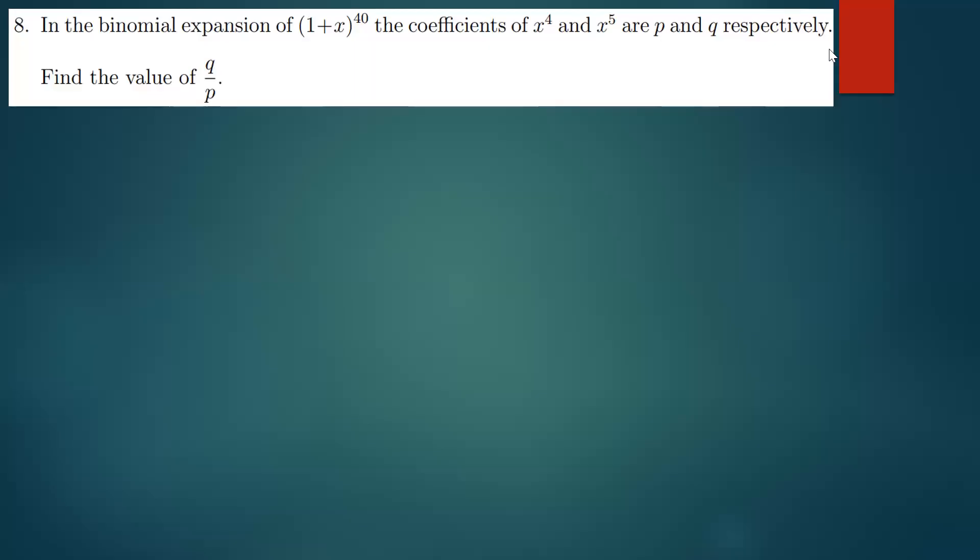Welcome back to this session. In this session I'm going to be discussing this question on the screen, which says: in the binomial expansion of (1 + x)^40, the coefficients of x^4 and x^5 are p and q respectively. Find the value of q over p. This is a very simple question.